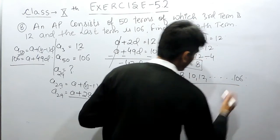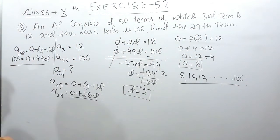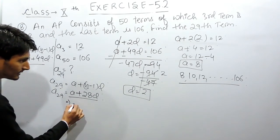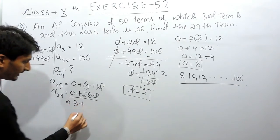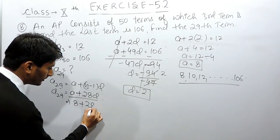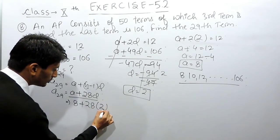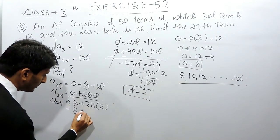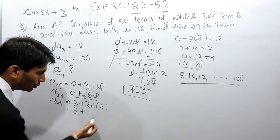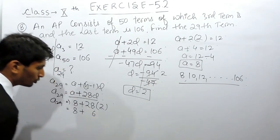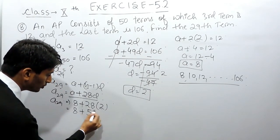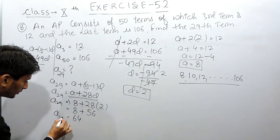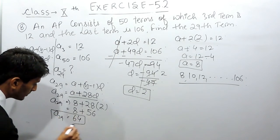So this will be the AP here, but you have to find the 29th term. So the 29th term: A is 8, the first term is 8, and the common difference is 2. So the 29th term equals 8 + 28 into 2, which is 56. So 8 + 56 = 64. So the 29th term equals 64.